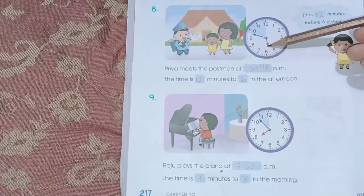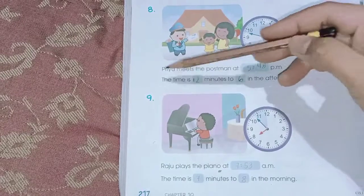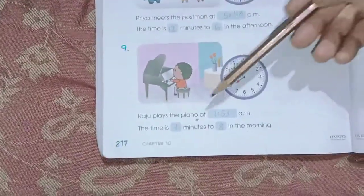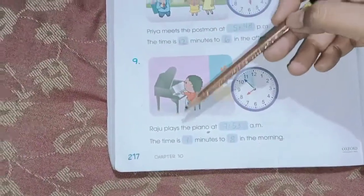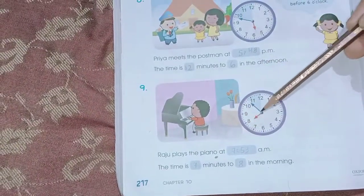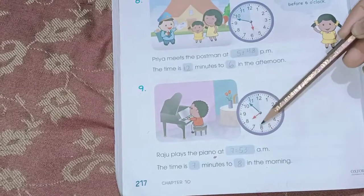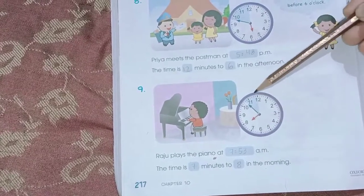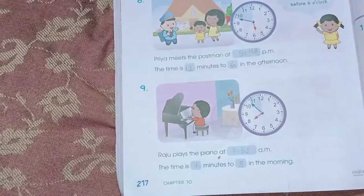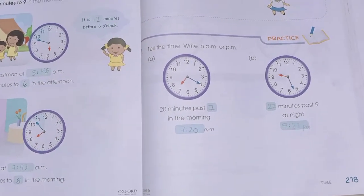Page number 217. Again we have to write the time. It's 5:48, which means the time is 12 minutes to 6 in the afternoon. Here, Raju plays the piano at 7:53 because there are 7 minutes left until 8.